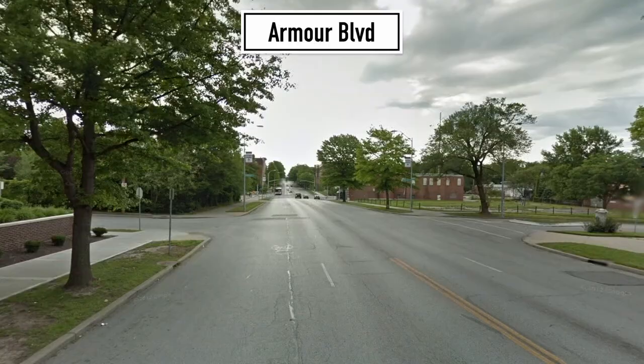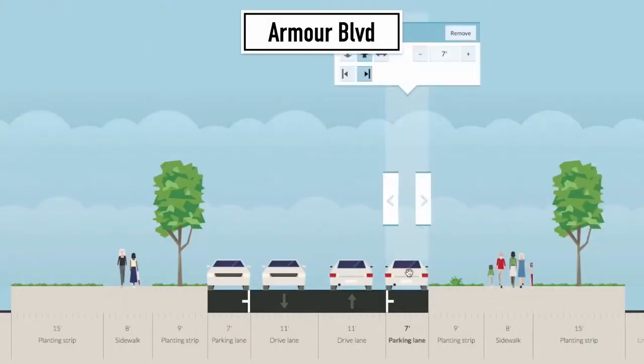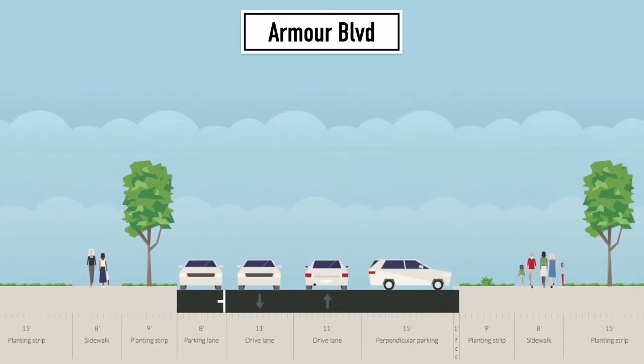I'm going to have to be the fuddy-duddy planner here and say you've got to take into account other needs, like cars in addition to bikes. So here's a good example of a community that did just that. This is Armour Boulevard in Kansas City — I know there's some people here from Kansas City. The community said they would like to get bike lanes in there too. Here's what it looks like right now, but we can also take into account the needs of perpendicular parking. And you can see that happening right here, right now.